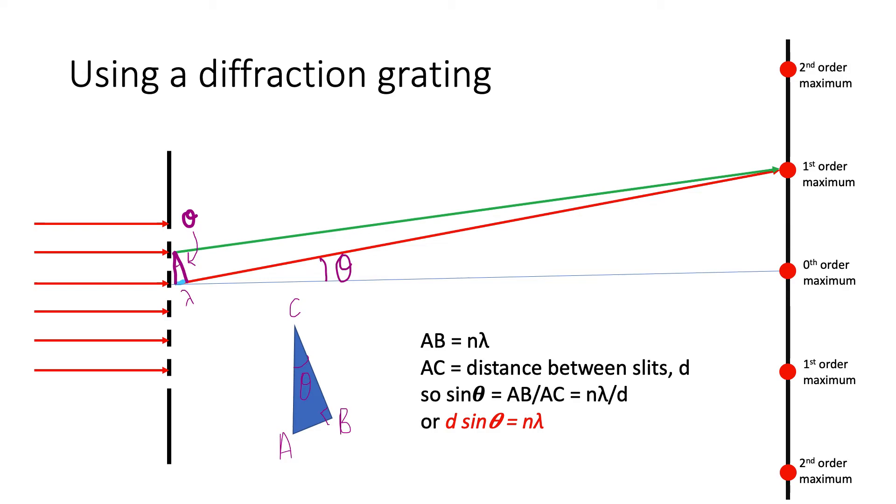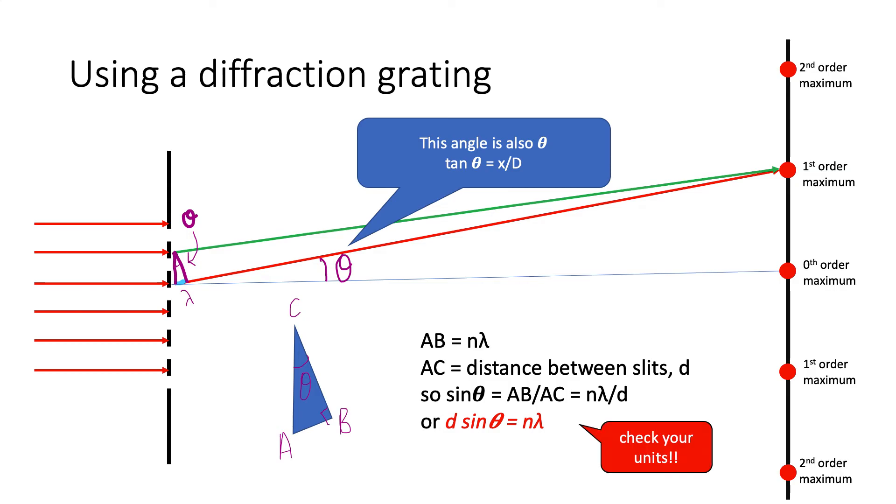In order to work out the wavelength of the light, we need a diffraction grating of known distance between the lines. And then we need to know the distance of the diffraction grating from the screen and the separation of the maxima. From those fairly straightforward measurements, we can do a simple bit of algebra to work out what the wavelength of the light is. To work out theta, tan theta is the separation of the maxima divided by the distance from the diffraction grating to the screen.